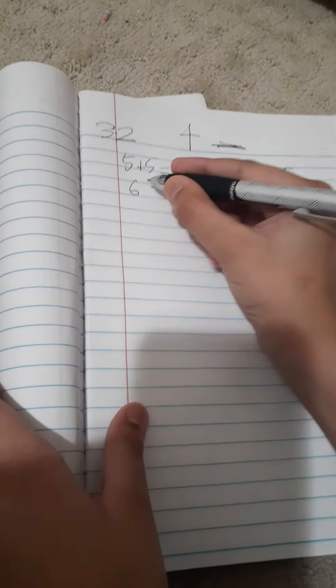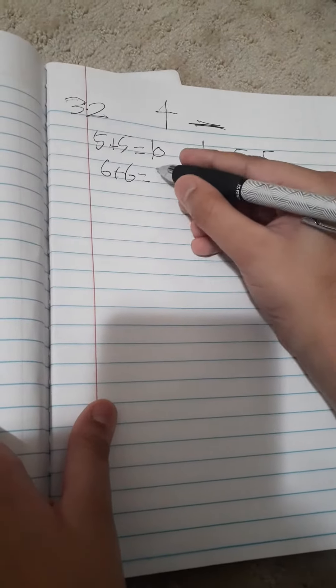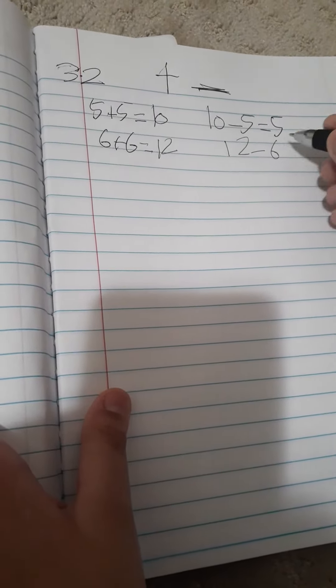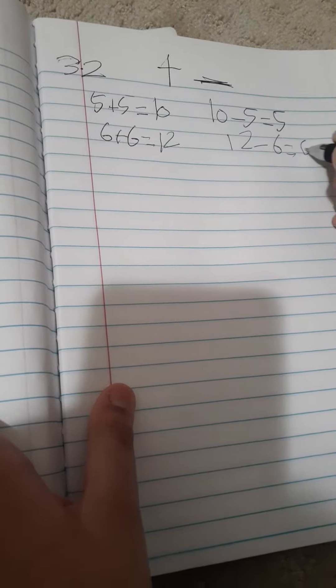6 plus 6 equals 12. Now the next question: 12 minus 6 equals 6. Like, add it first, then subtraction.